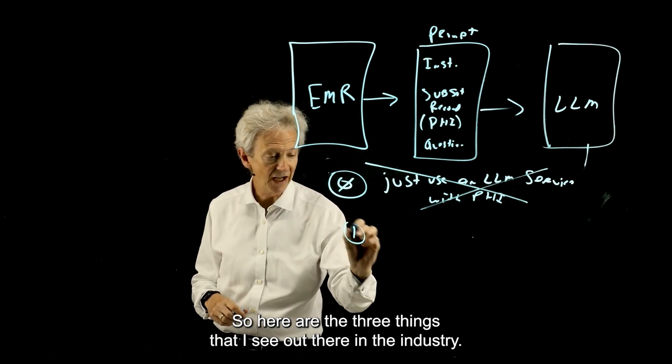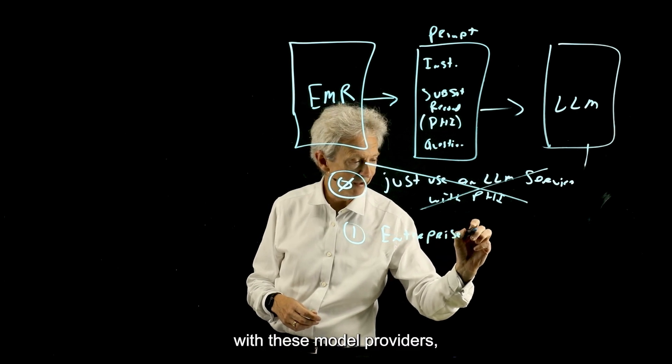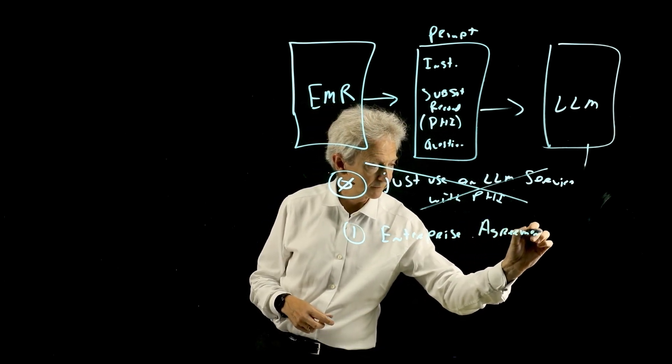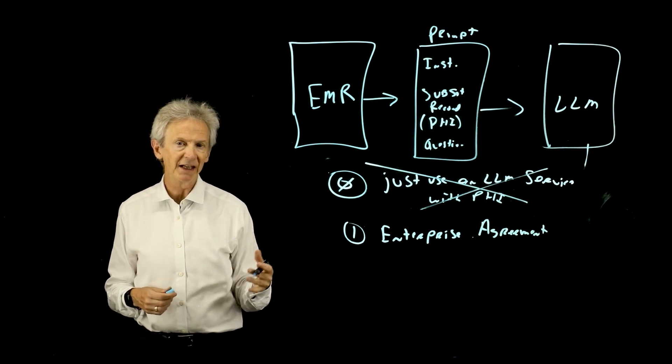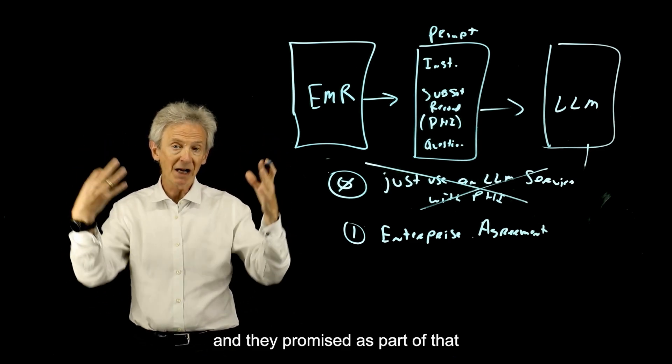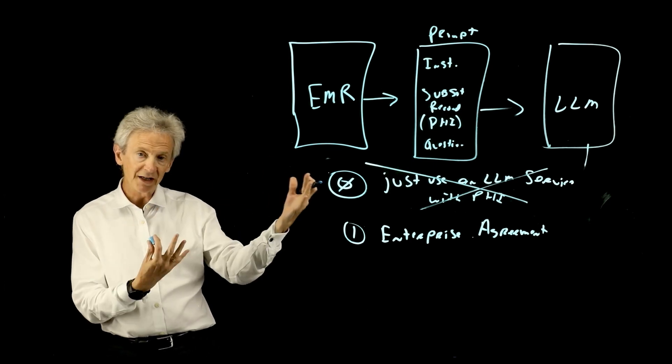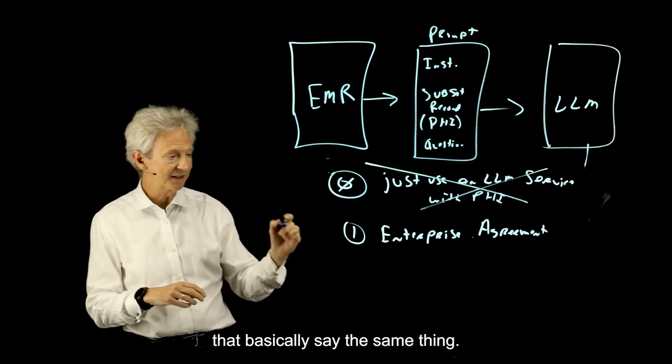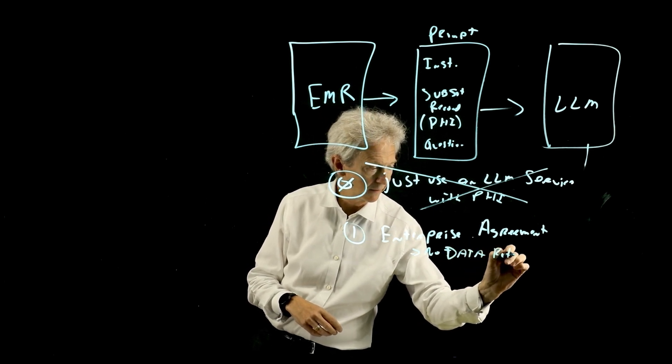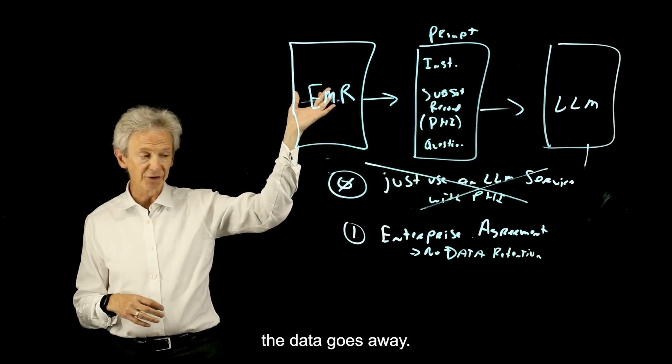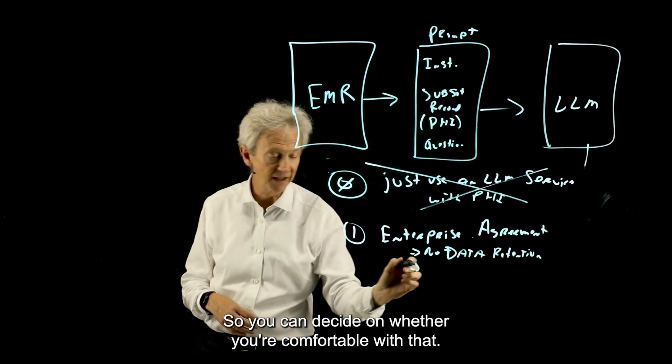So here are the three things that I see out there in the industry. The first is a better agreement with these model providers. I'm just going to call it an enterprise agreement. But the same way you might have an agreement with Microsoft Azure, with AWS, with GCP to host your electronic medical record in the cloud and they promise as part of that agreement not to use your data in other ways, that sort of thing. You can get enterprise agreements with these model service providers that basically say the same thing. And the key things are no data retention. So once the question is asked and answered, the data goes away. Sometimes they'll say, hey, can we keep it for a few days to support you to debug problems, that sort of thing. So you can decide on whether you're comfortable with that.